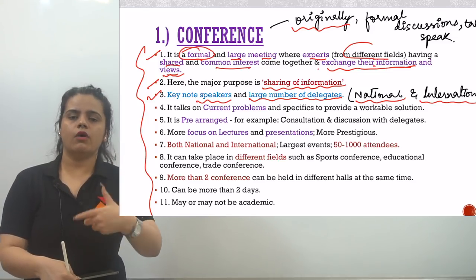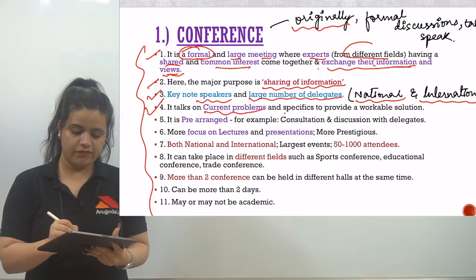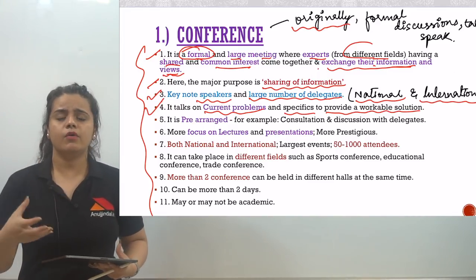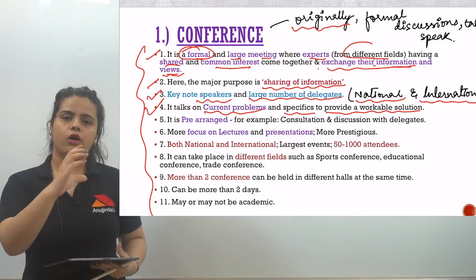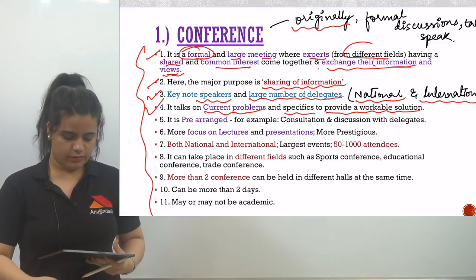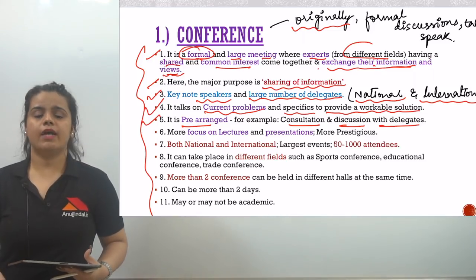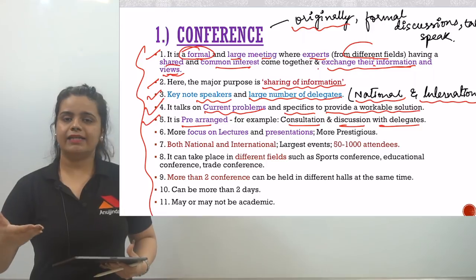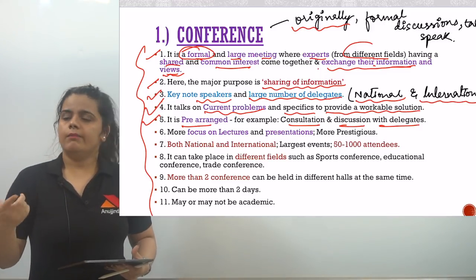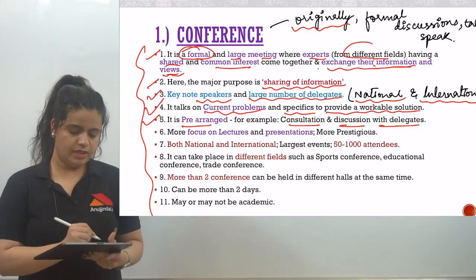They confront the audience, they talk and interact. The fourth feature is it talks on current problems and specifics to provide a workable solution — they talk about current problems and also focus on resolving those problems. The fifth feature is it is pre-arranged — consultation and discussion with delegates is pre-planned, perhaps one to two months in advance.